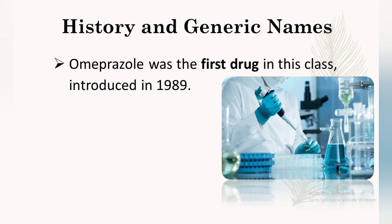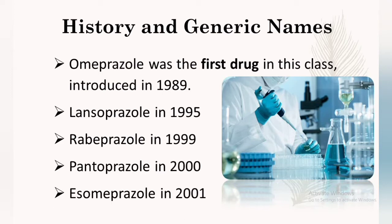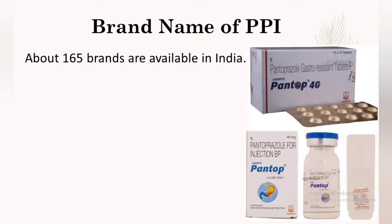Let's start our video with the history and sub-generation of pantoprazole. Omeprazole was the first drug in the class, introduced in 1989. After omeprazole, lansoprazole was discovered in 1995, whereas rabeprazole was found in 1999. Pantoprazole was introduced in 2000 and esomeprazole in 2001. Esomeprazole is a newer molecule in proton pump inhibitors.